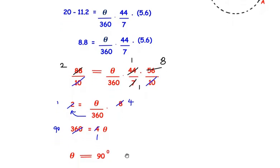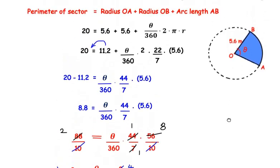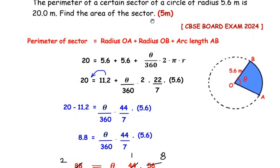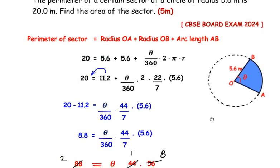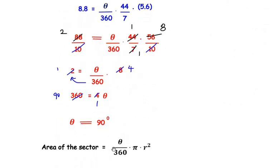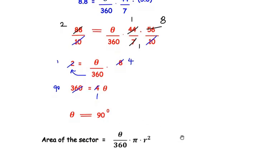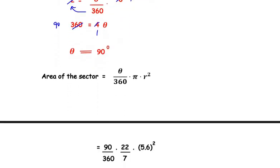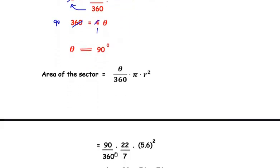Here we have written θ equals 90 degrees. Now once we have got the central angle θ, let us find out the area of the sector. The formula for area of sector is θ/360 × π × r². So θ we got as 90 and r is given as 5.6. Let us substitute the values. We have written θ is 90, so 90/360 times π is represented as 22/7 times the radius is 5.6 whole squared.